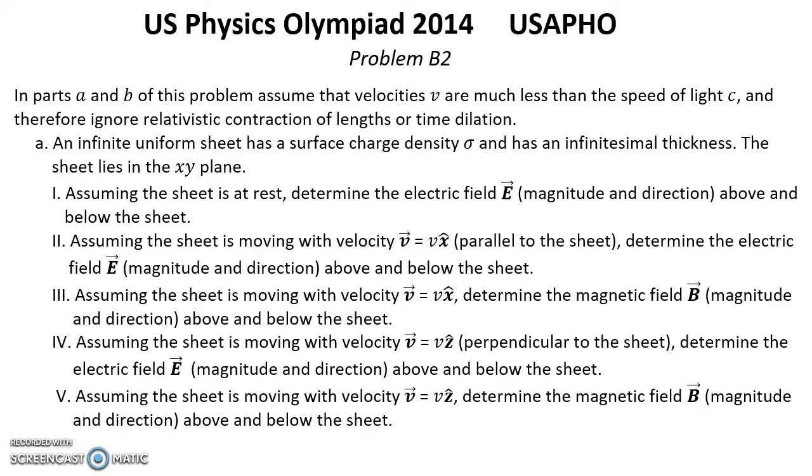Question 4: Assuming the sheet is moving with velocity V in the Z direction perpendicular to the sheet, determine the electric field E magnitude and direction above and below the sheet.